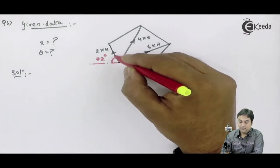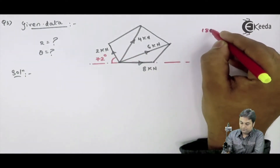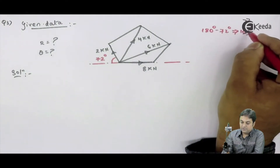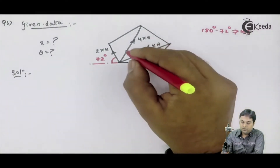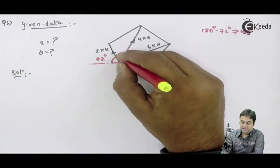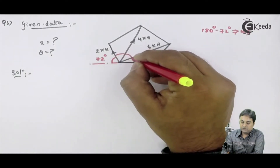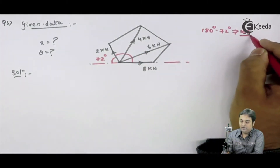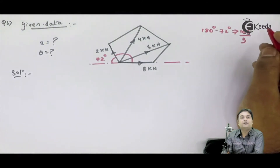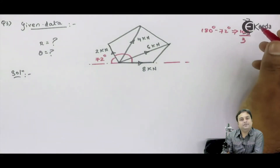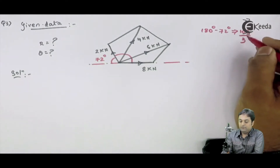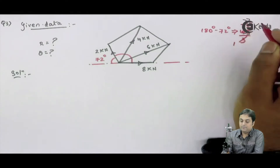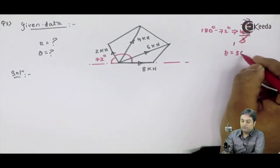Since this is 72°, the remaining portion will be 180° − 72° = 108°. I have 108° as the total angle divided among 3 parts, so 108 ÷ 3 = 36°. Therefore each angle theta will be 36 degrees.